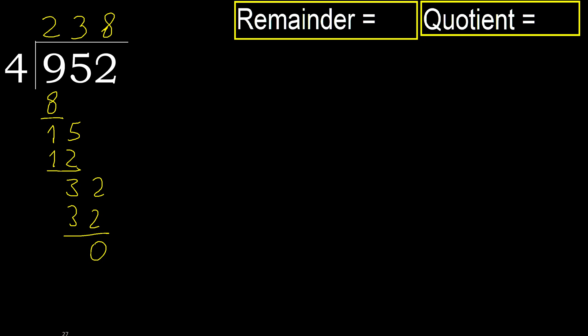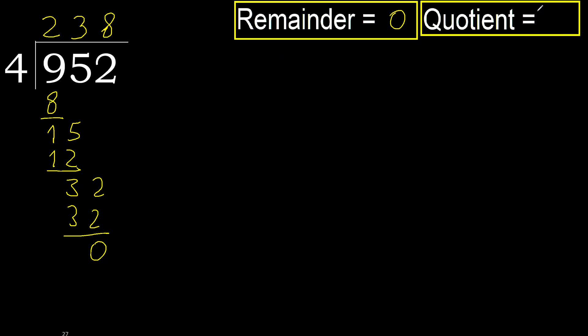There is no next number, therefore we finish. The remainder is 0. Therefore 952 divided by 4 is 238. Thank you.